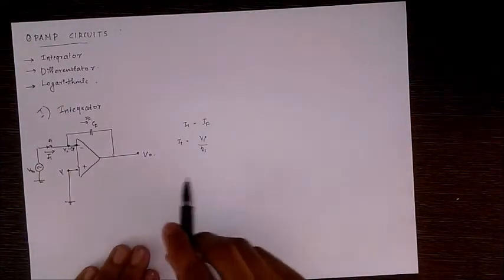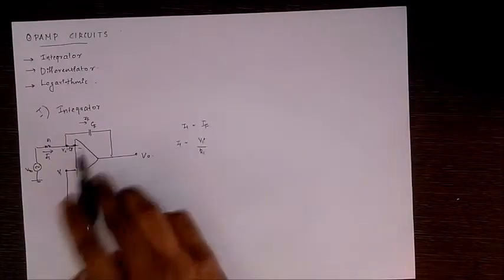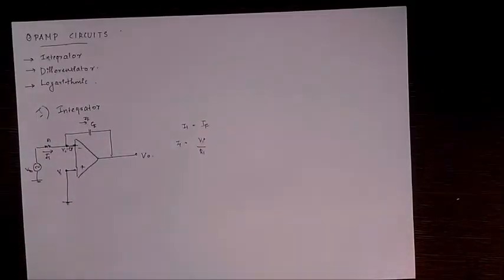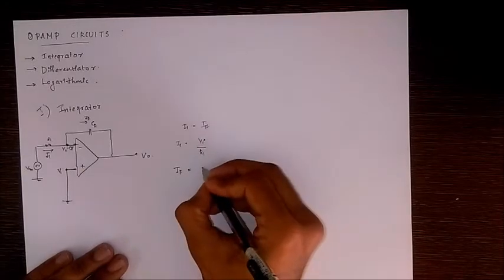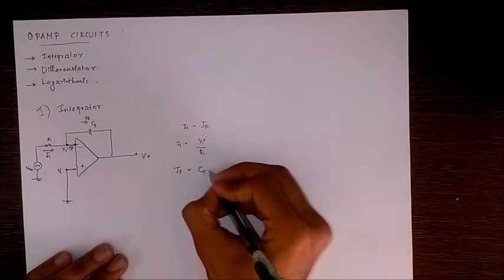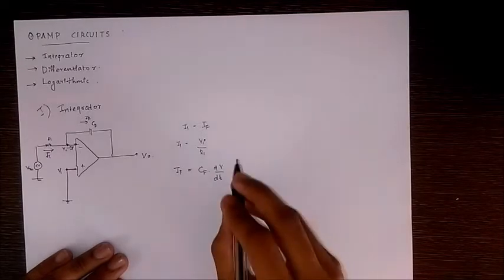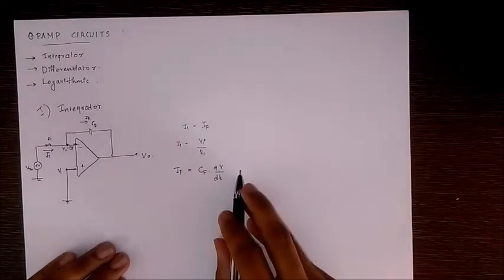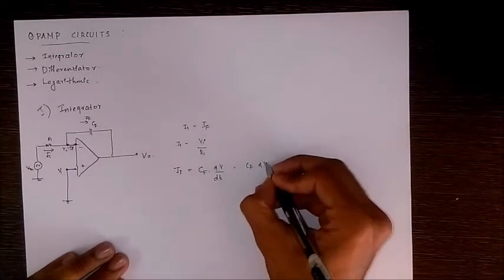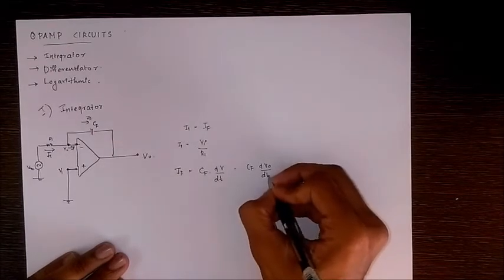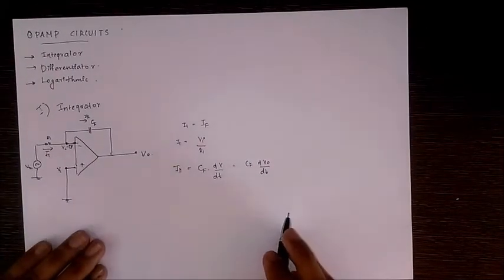Now, the current through a capacitor is given by I equal to CF into dV by dt, where V is the potential difference. So we get CF into dV0 by dt. Equating these two expressions,